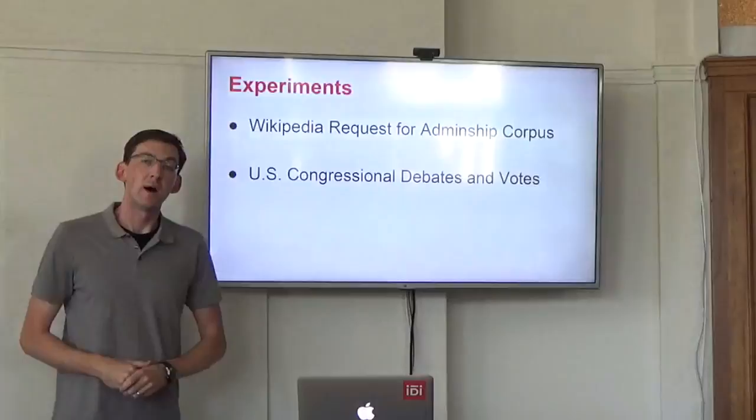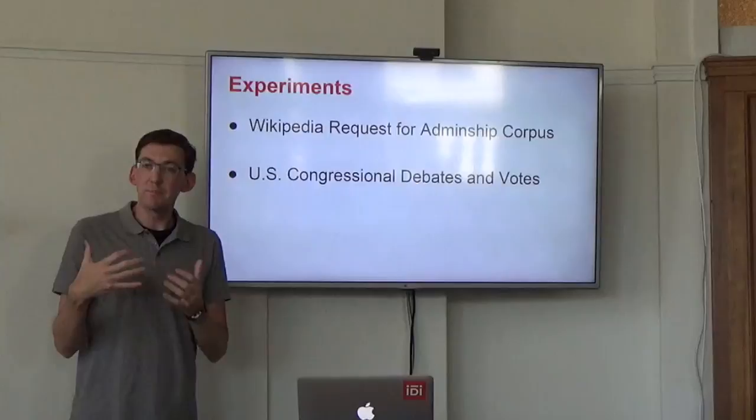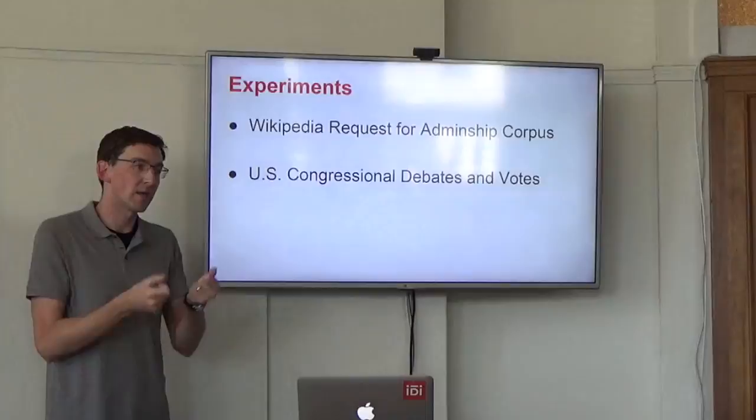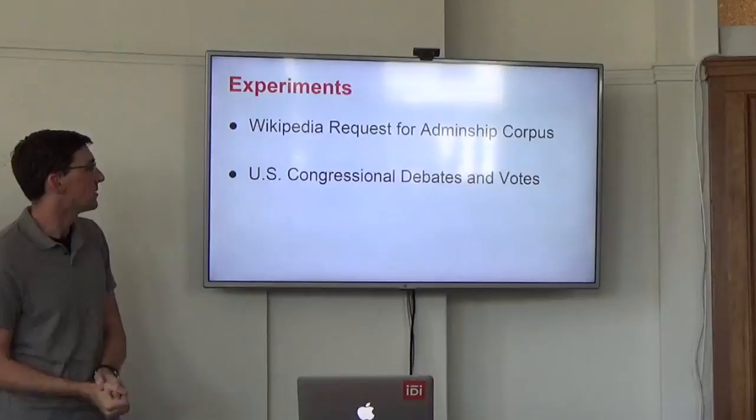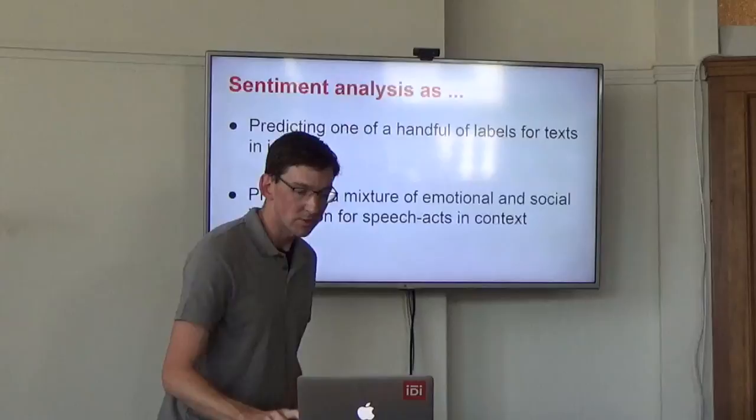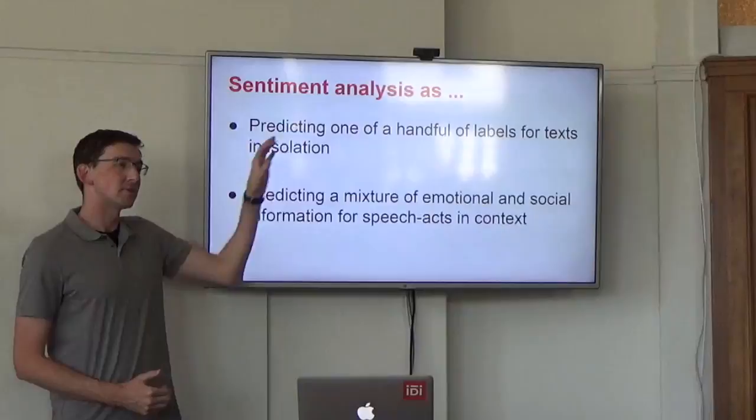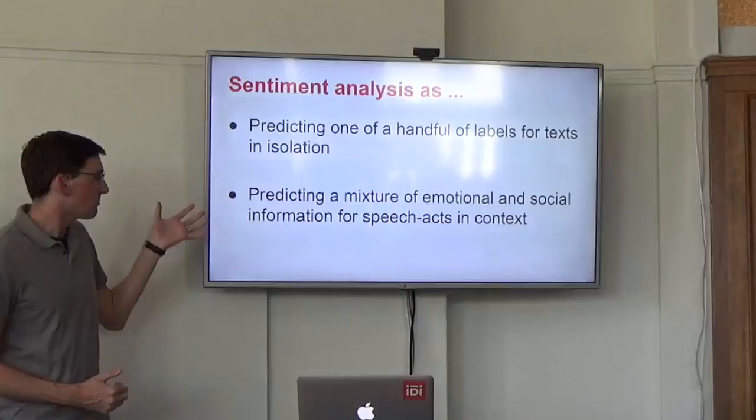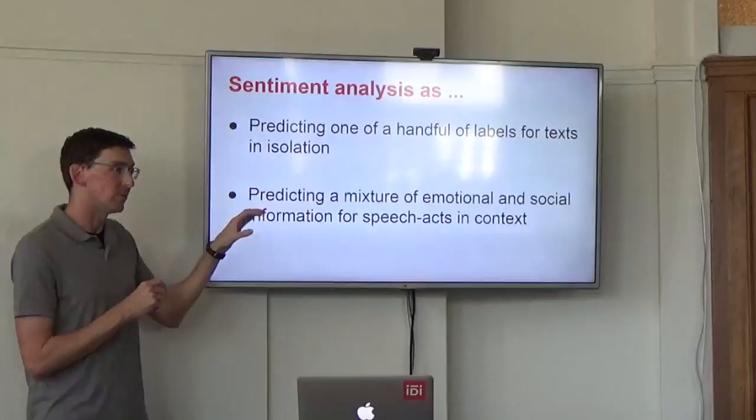We did experiments with understanding Wikipedia politics where people vote for each other and also issued texts about why they voted the way they did. So we have the network edges and the textual information. And we did something similar with a collection of congressional debates and votes on the House floor of the U.S. Congress. So just returning here, I could say a lot more about interesting work that's happening with semantic composition in this first vein of sentiment analysis. But I think there's really exciting stuff to be done thinking about the contextual effects that I've covered here in this second part. So thank you.